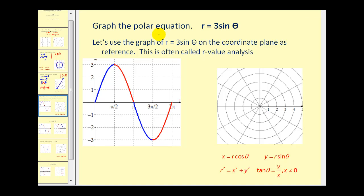Now let's go ahead and take a look at a couple more. Let's say we want to graph the polar equation r equals three sine theta. Another technique is to graph r equals three sine theta on the coordinate plane as reference. And this is often called the r value analysis. So what we're saying here is we'll call the y-axis r and the x-axis theta.